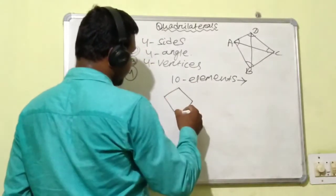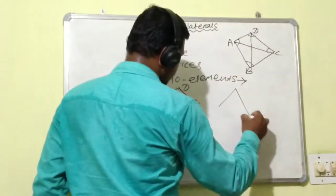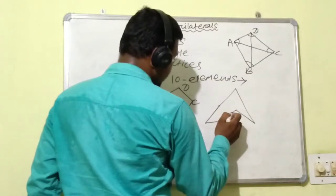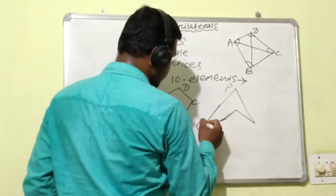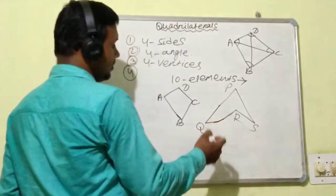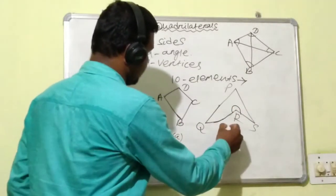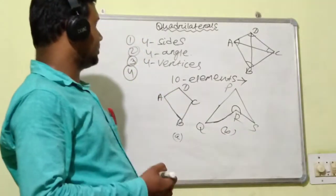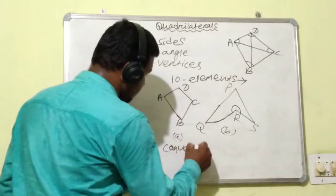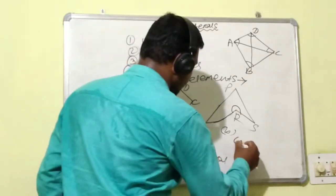This is one variety of quadrilateral, let it be A, B, C, D. Another variety — suppose it may look like this — may be named as P, Q, R, S. In P, Q, R, S quadrilateral, angle R is a reflex angle. But in figure A, B, C, D, we will see all angles are less than 180 degrees. So the first one is called a convex quadrilateral and the second one is called a concave quadrilateral.